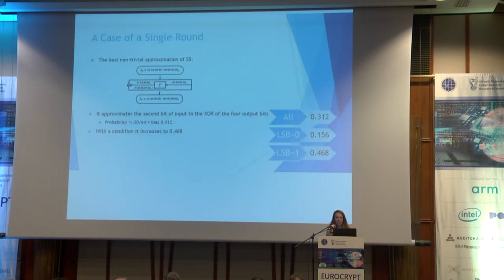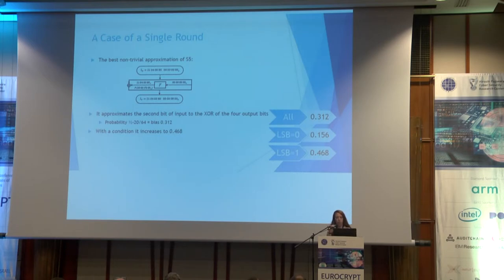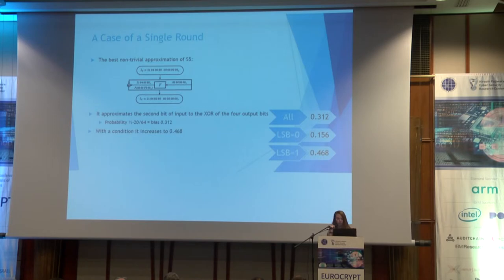I start with an example of such a linear dependency with a single active S-box. The bias of the best non-trivial one-round linear approximation is minus 20 divided by 64, which is 0.312. Once we condition it on the LSB, we get in half of the data, with the LSB equal to 0, a smaller bias of 0.156.